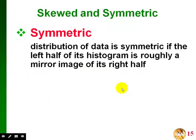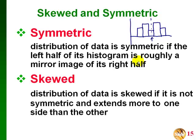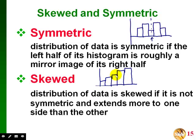When we talk about the shape of a data distribution, a symmetric distribution means the left and right halves of a histogram are close to being mirror images. If you draw a line through the middle of the center bar, you have roughly a mirror image on either side. A skewed distribution is not symmetric — it extends more to one side than the other.